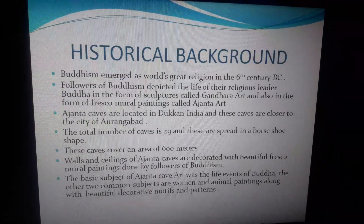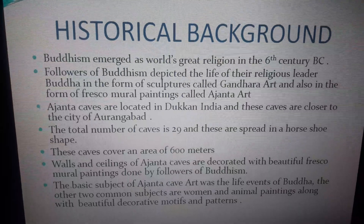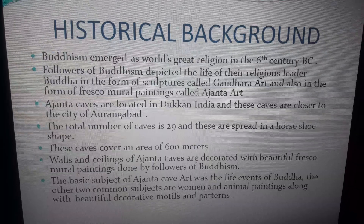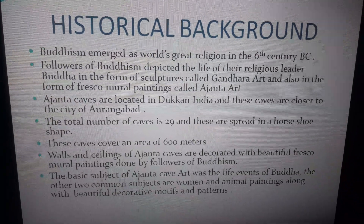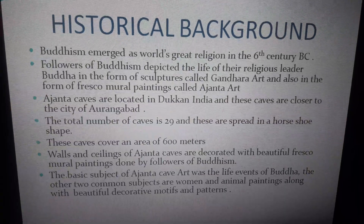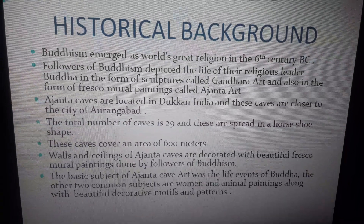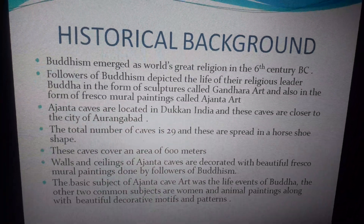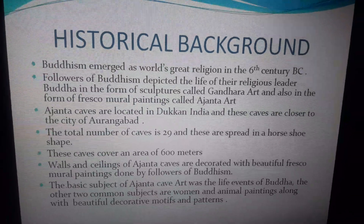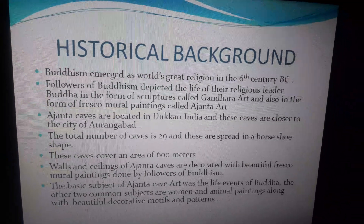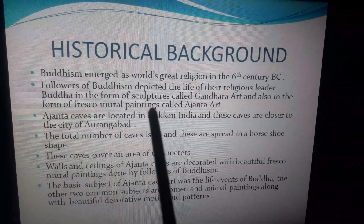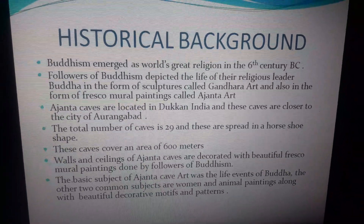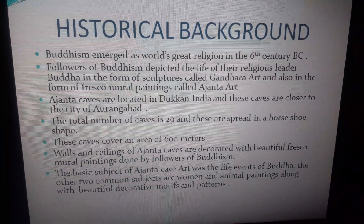Starting with the historical background: Buddhism emerged as a world religion in the 6th century BC. The followers of Buddhism showed the life of their religious leader Buddha in the form of sculptures called Gandhara art, and also in the form of fresco mural paintings called Ajanta art. Ajanta art refers to the fresco mural paintings painted by the followers of Buddhism to show the life events of Buddha.